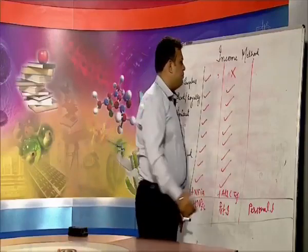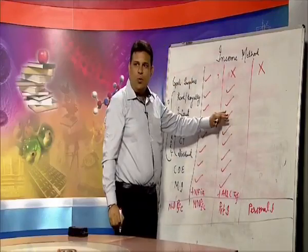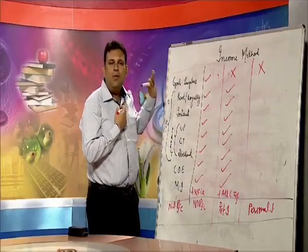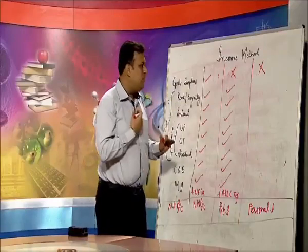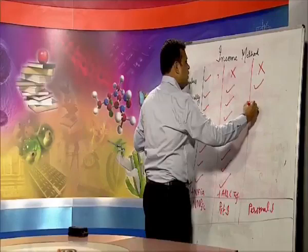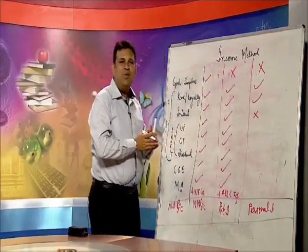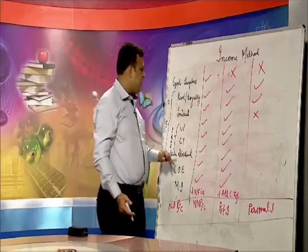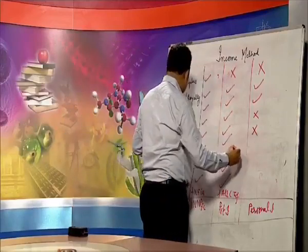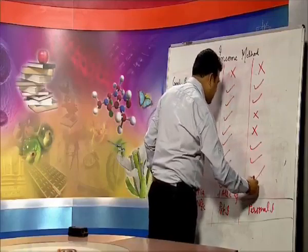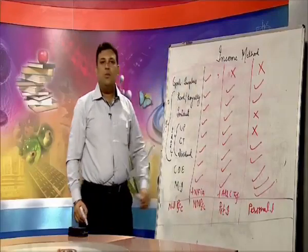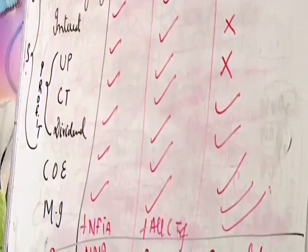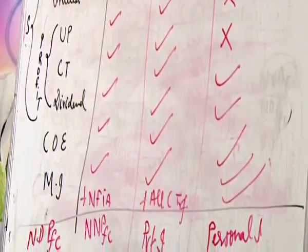Personal income comprises what a particular household receives. Suppose I am a worker — I earn rent, interest; UP is reserved by the company, so not distributed and not calculated for me; CT goes to government; then dividend, compensation, mixed income, NFIA, and all transfers. This is your personal income — the income of a particular household. This is the complete picture of the income method.